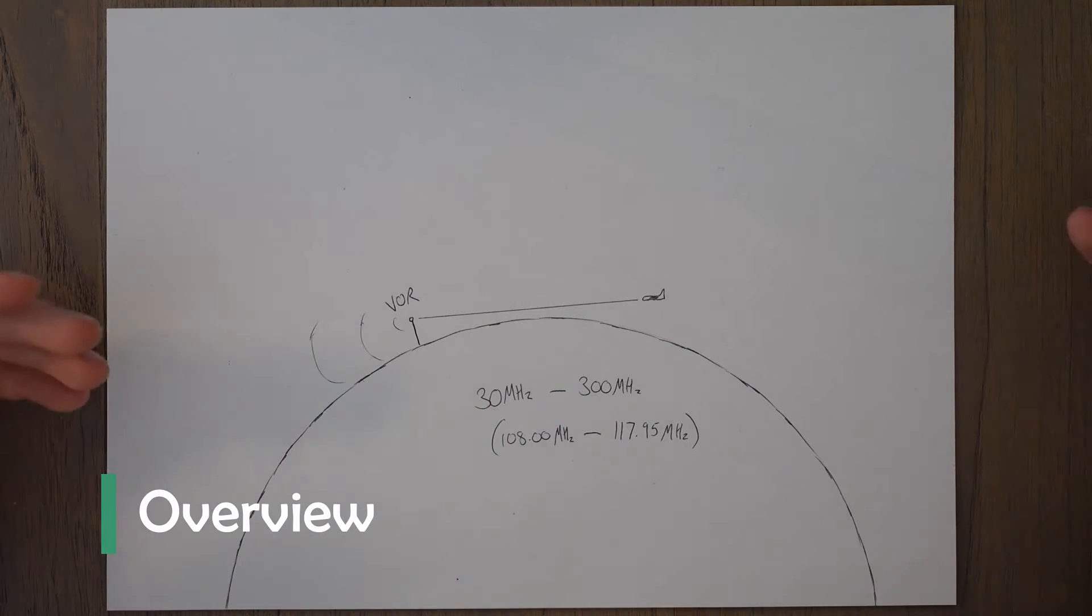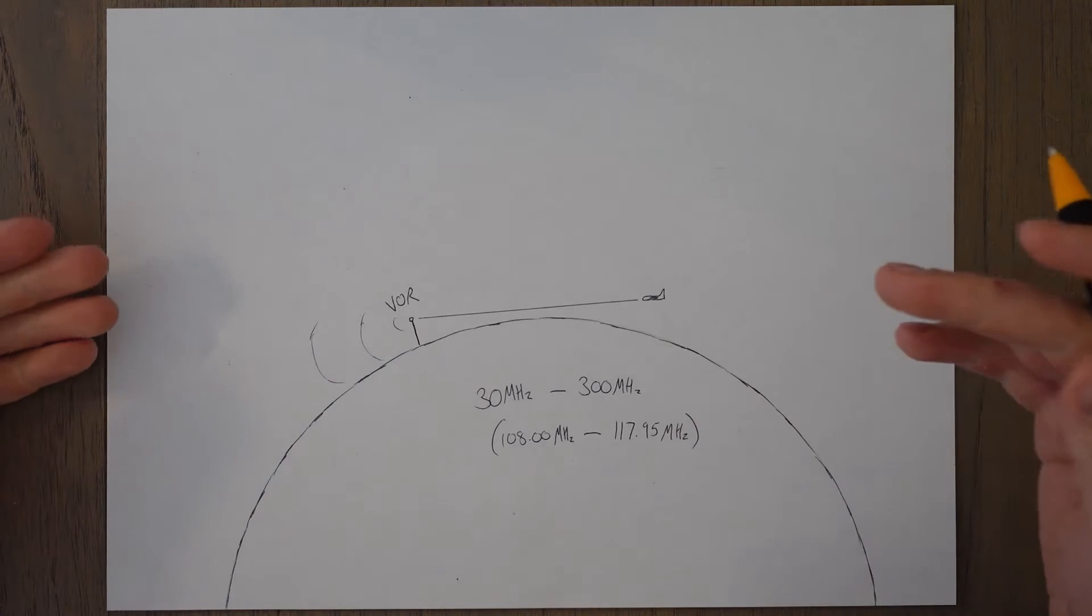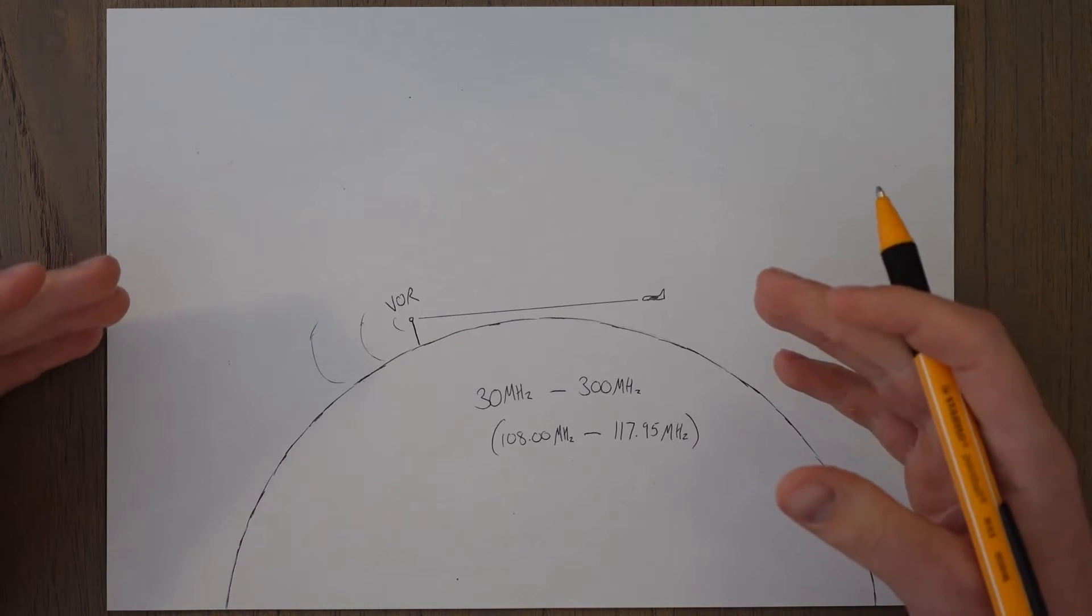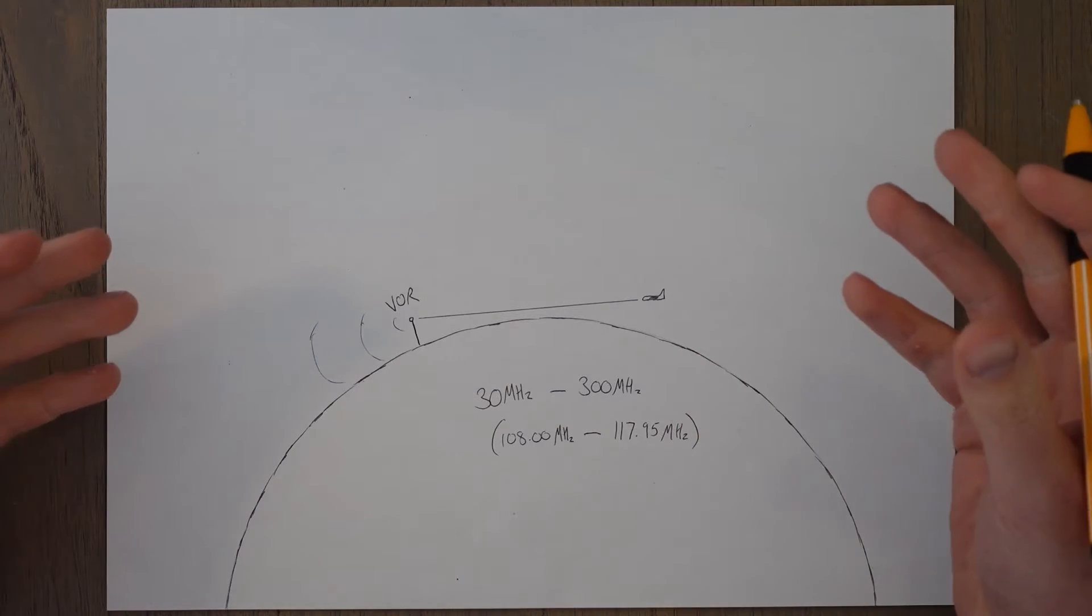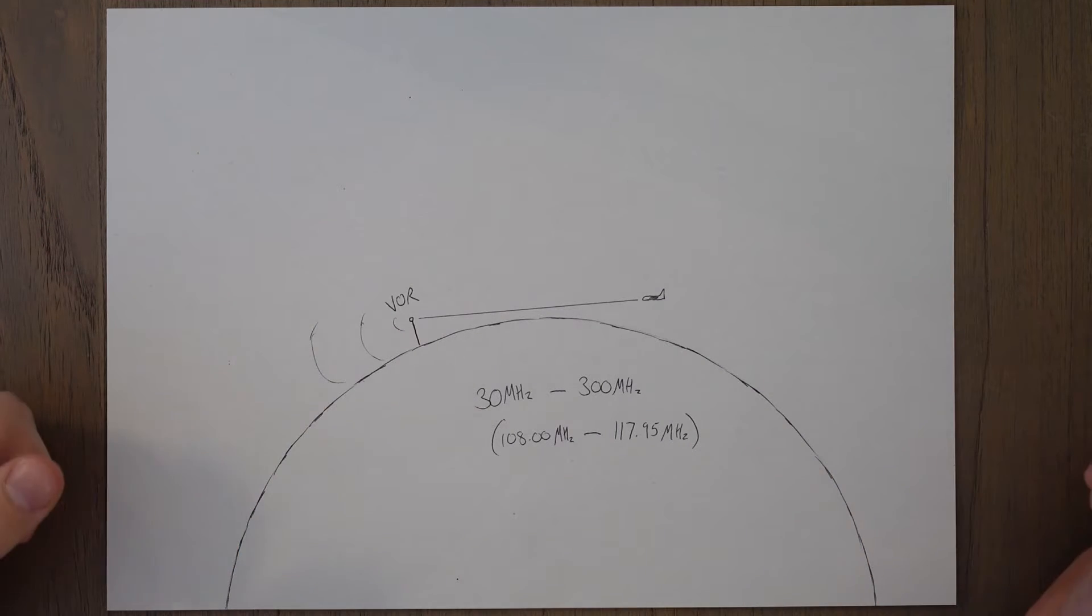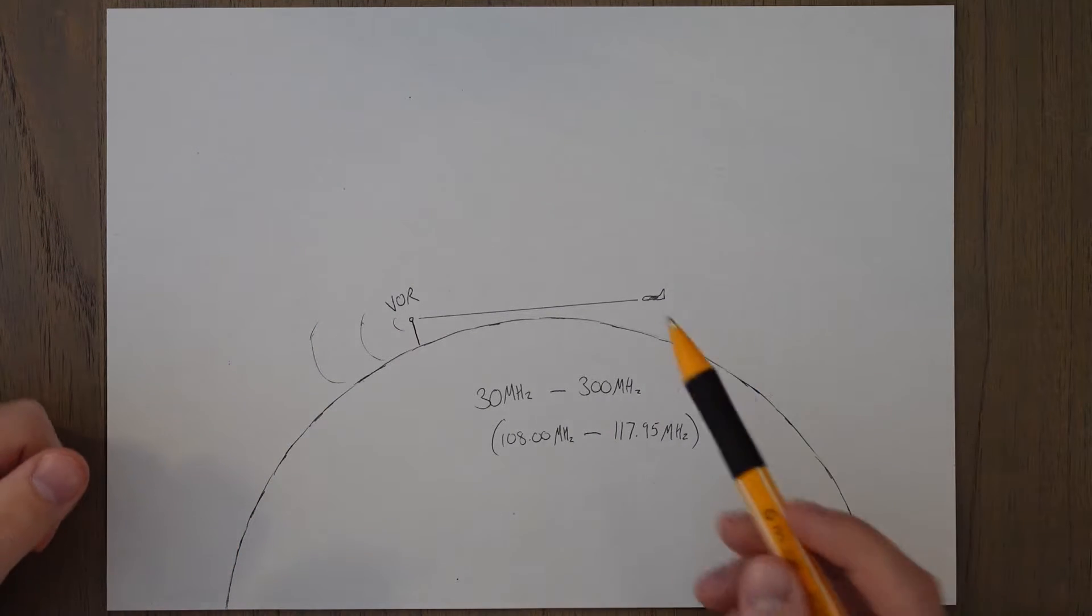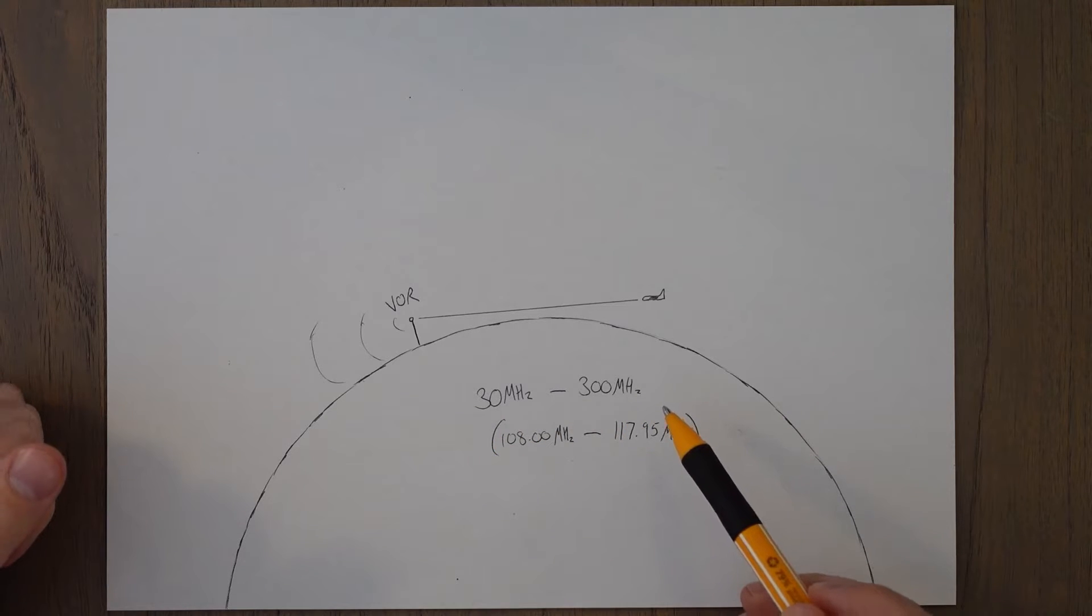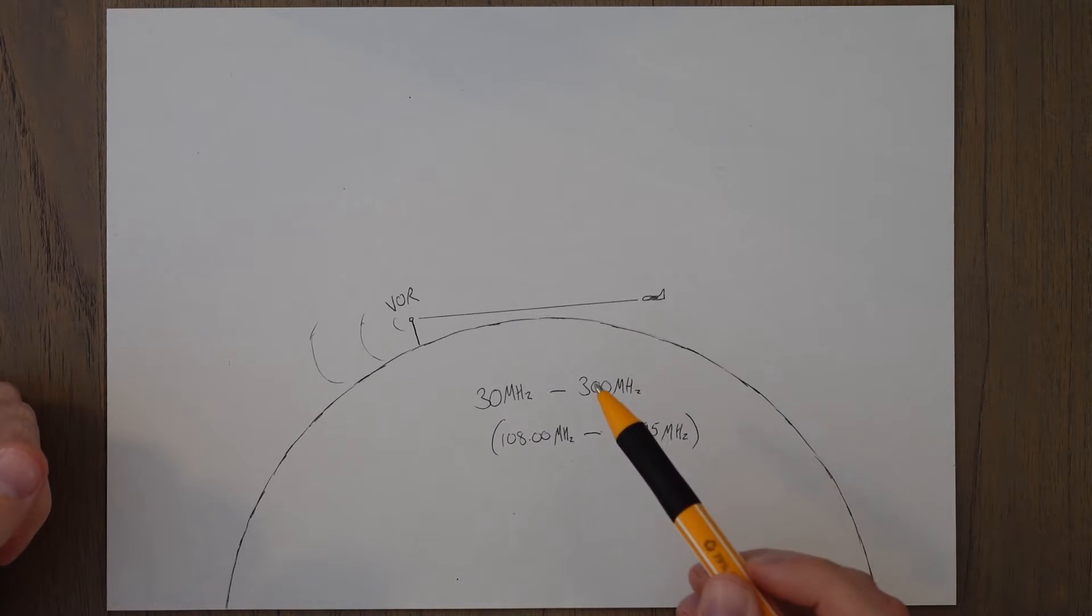A VOR, which stands for very high frequency omnidirectional range beacon, is a type of short-range radio navigation system used by aircraft. Even though it has range in the title, it provides no range or distance information. It transmits a signal in all directions on the VHF band between 30 and 300 megahertz, and more specifically between 108 and 117.95 megahertz.